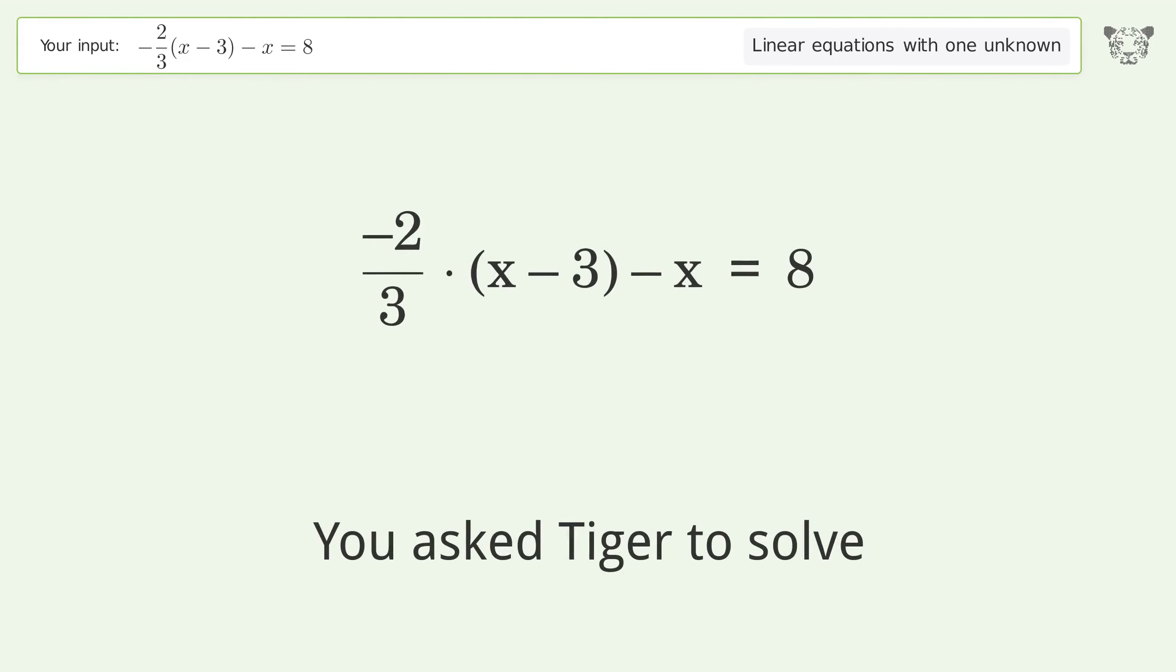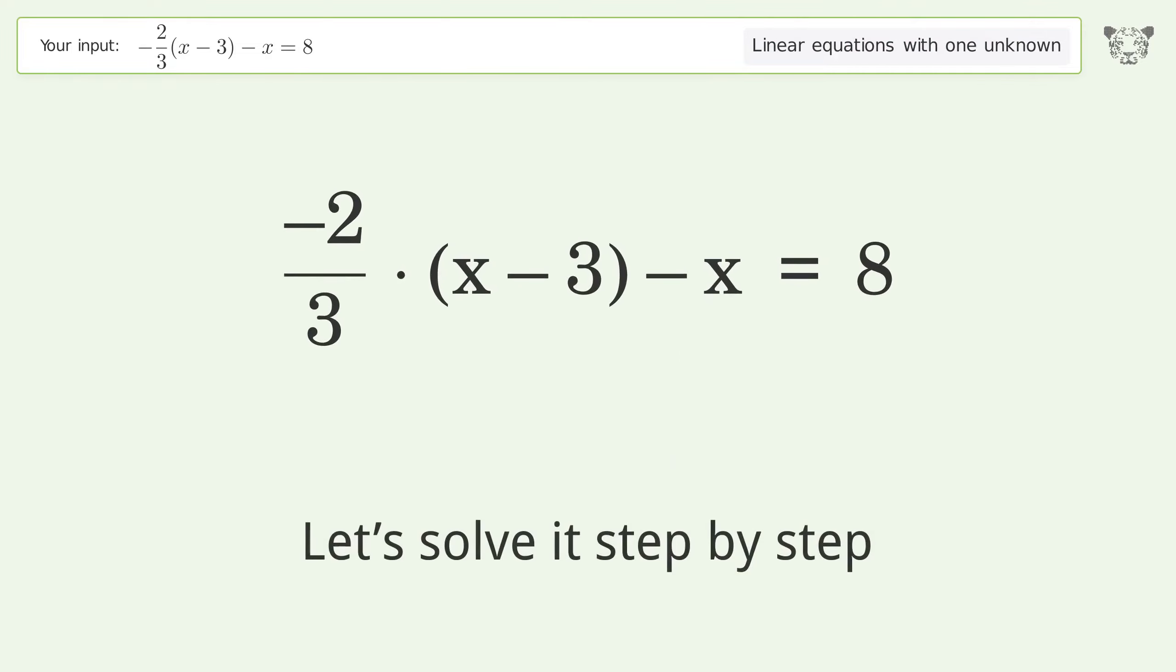You asked Tiger to solve this problem dealing with linear equations with one unknown. The final result is x equals negative 18 over 5. Let's solve it step by step.